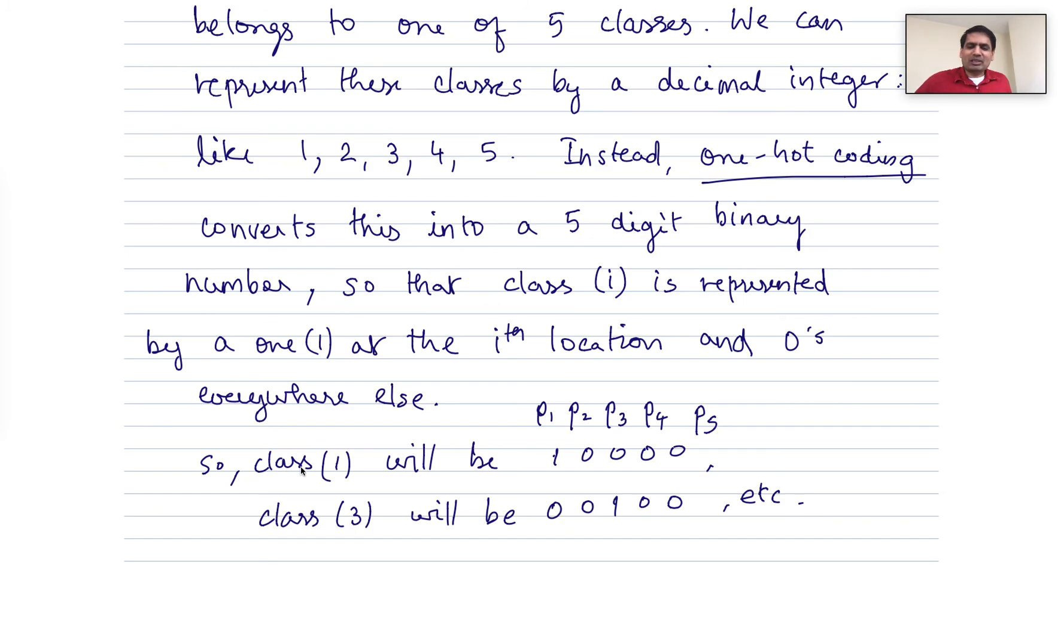So let me just explain what that means. So if something belongs to class one, instead of saying it belongs to class one, we'll say the output is one, zero, zero, zero, zero. If something belongs to class three, instead of saying the output is three, we'll say it's zero, zero, one, zero, zero, so that the third digit of this number or of this vector is going to be a one.